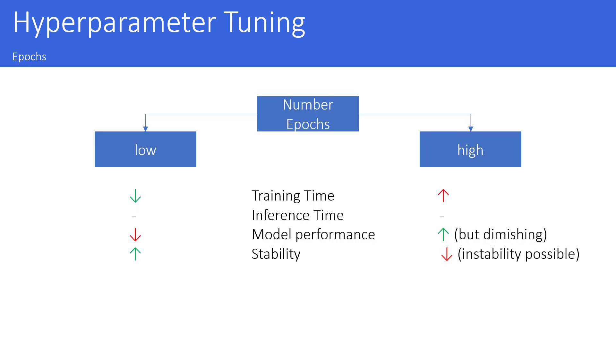The next hyperparameter I want to touch on is the number of epochs. Here you can see you have two different options. You could have a low number of epochs or a very high number of epochs. And this of course is impacting your training time. Because the higher the number of epochs, the longer the training time. On the inference time, that doesn't have an impact. But it does have also an impact on the model performance.